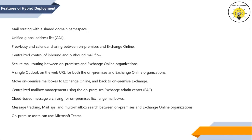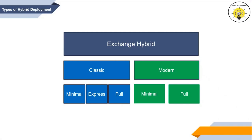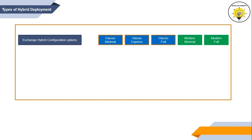Now let's discuss the different types of Exchange Hybrid Deployment options. Hybrid Configuration Wizard currently supports classic topology and modern topology. Classic topology includes minimal, express, and full options, while modern topology includes minimal and full. You select a topology while running the Hybrid Configuration Wizard, and based on your selection it configures the corresponding features. Not all topologies include all features.